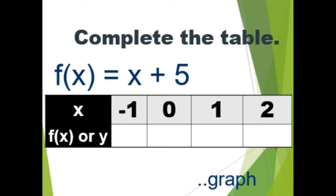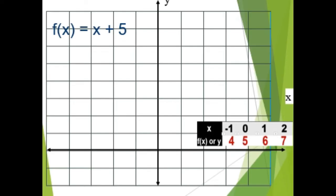Now it's your turn. Complete the table for f of x equals x plus 5. Find the value of y if x is negative 1, 0, 1, and 2. You can pause the video. If x is negative 1, y is 4. If x is 0, y is 5. If x is 1, y is 6. If x is 2, y is 7. Now it's your turn to graph f of x equals x plus 5. This is the graph of f of x equals x plus 5.